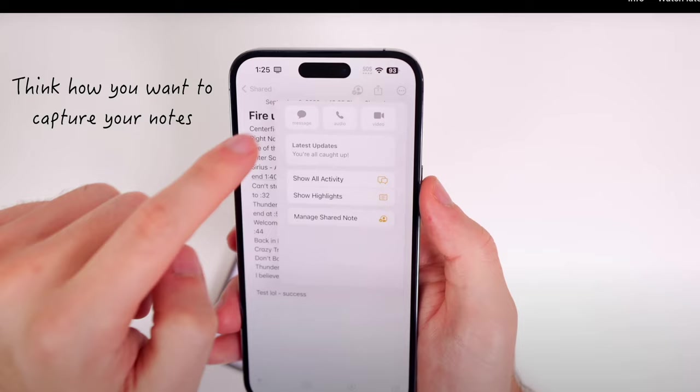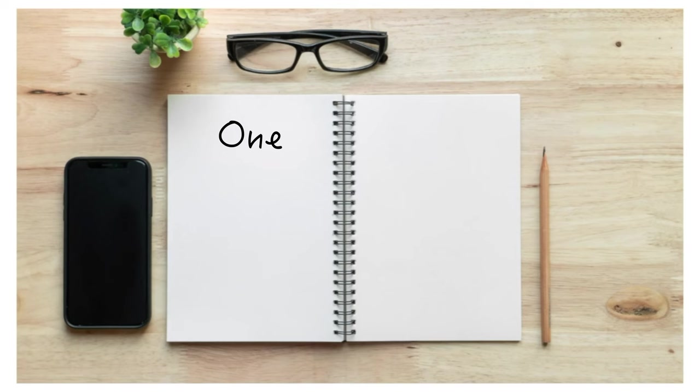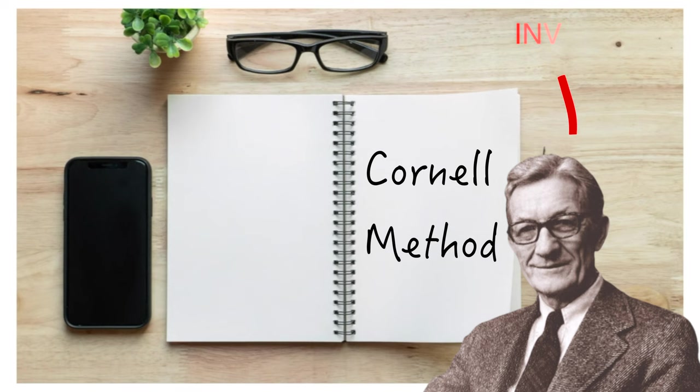Now that you've got your method down, let's talk about how to take effective notes. One important technique is the Cornell method, which involves dividing your page into three sections: a main note-taking area, a summary area, and a cue column.